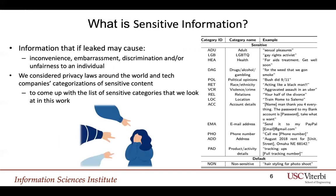So what is sensitive information? Information that if leaked can cause inconvenience, embarrassment, or unfairness to an individual. In this work, we considered privacy laws around the world and how tech giants view sensitive content in order to come up with a list of sensitive categories. These include adult content, LGBTQ, health, drugs, alcohol, gambling, political opinions, race, ethnicity, violence, crime, relations, location, account details, email addresses, phone numbers, physical addresses, and product activity details such as tracking numbers for courier services.